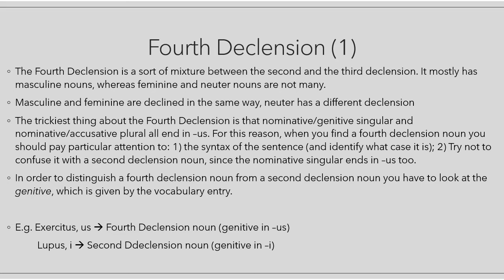The fourth declension is a sort of mixture between the second and the third declension, because it has some endings that are typical of the second declension and some endings that are typical of the third declension. It mostly has masculine nouns, whereas feminine and neuter nouns are not too many. The masculine and the feminine gender are declined in the same way, while neuter has a different declension. The trickiest thing about the fourth declension is that nominative and genitive singular and nominative and accusative plural all end in 'us'.